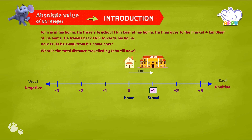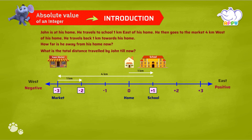He travels from school to the market, which is 4 km west. So John travels 4 km west from school — that is minus 3 or negative 3. Then he travels 1 km east from the market — that is minus 2.